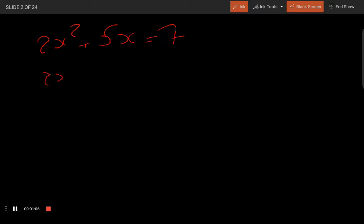2a squared plus 5a minus 7. 2a squared plus 5a minus 7 plus 5H.